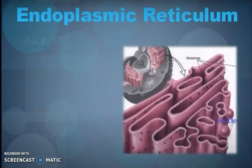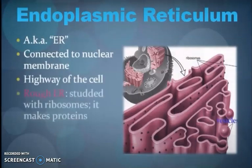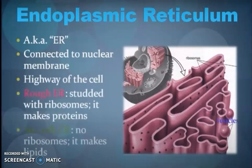The endoplasmic reticulum, also known as ER, connects to the nuclear membrane and acts as the highway of the cell. There are two types of ER: rough endoplasmic reticulum (RER) and smooth endoplasmic reticulum (SER).